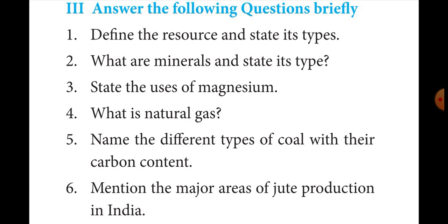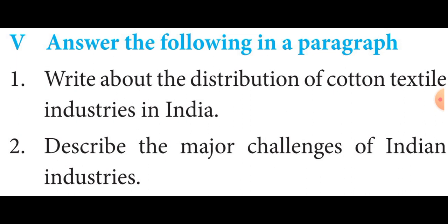Roman numeral V — answer the following in a paragraph. The first question: Write about the distribution of cotton textile industries in India. This is an important public exam question. Turn to pages 178 and 179 — from the agro-based industries heading, then the cotton textile industry heading, fully including the blue color box. Pages 178 and 179 fully — you have to learn those line by line.